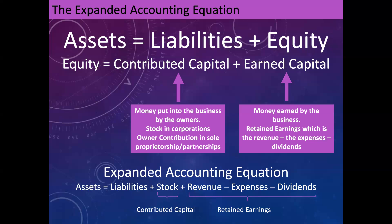So our expanded accounting equation is that assets equal liabilities, plus stock, plus revenue, minus expenses, minus dividends. I hope this gives you a better understanding of what all of these terms mean and how they're interrelated. Have a great day.